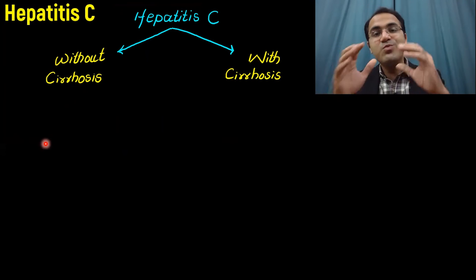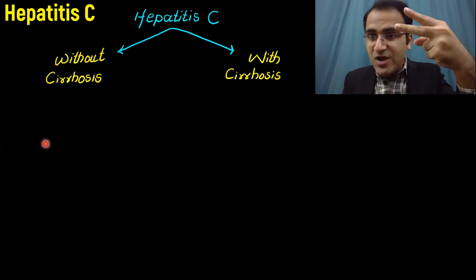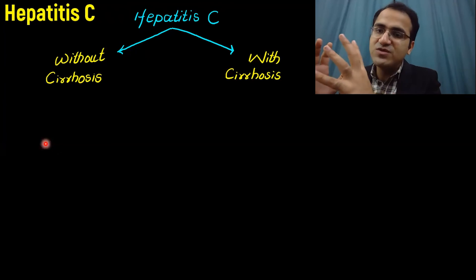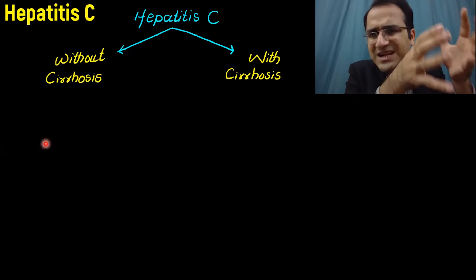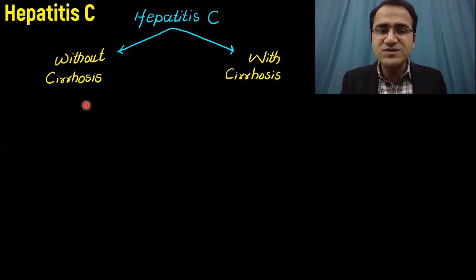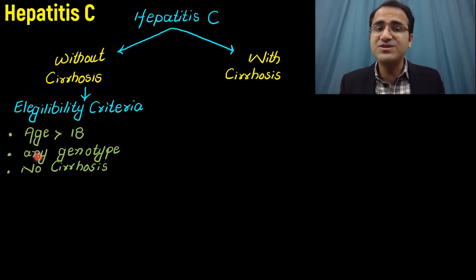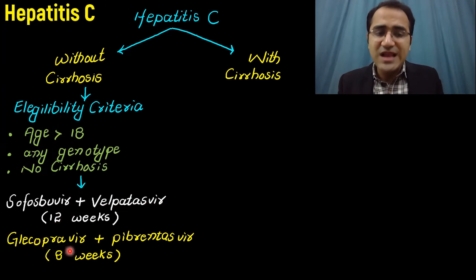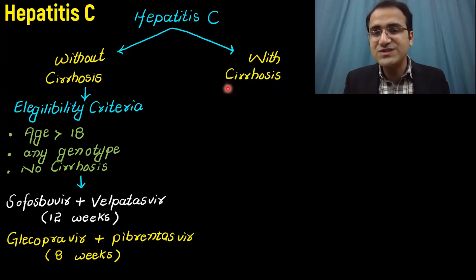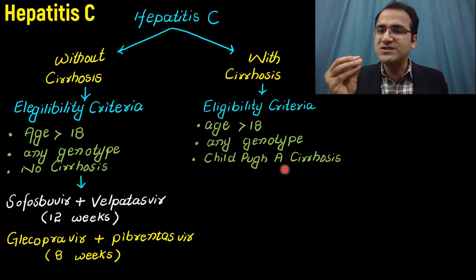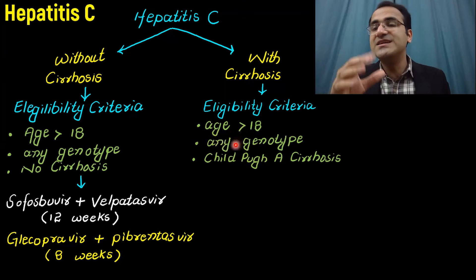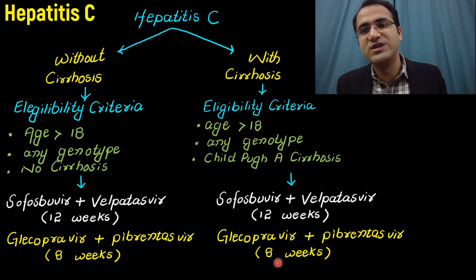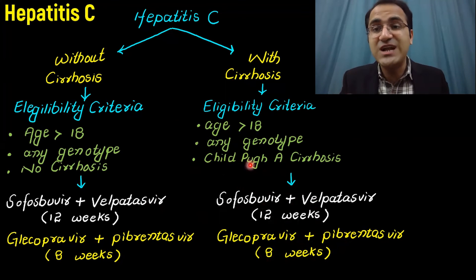HCV treatment depends on the level of liver cirrhosis, viral load, and viral genotype. For patients with no cirrhosis or Child-Pugh A cirrhosis, age greater than 18, any genotype: sofosbuvir plus velpatasvir for 12 weeks, or glecaprevir plus pibrentasvir for eight weeks are the recommended regimens.